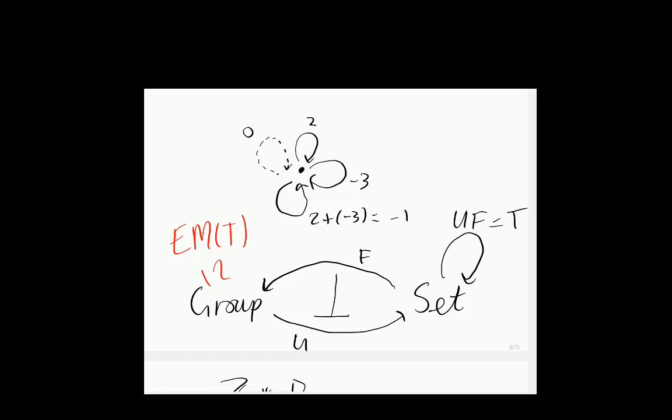If we compose these two functors - doing U after F - we get something we can call T. It turns out that T is going to give us a monad on the category Set. And if we get the Eilenberg-Moore category, or the category of algebras of this monad, that's equivalent to the category of groups. So basically the goal here is to get this monad, because with it we can get a different perspective on what groups are. The way all this works is explained in my video on monads.